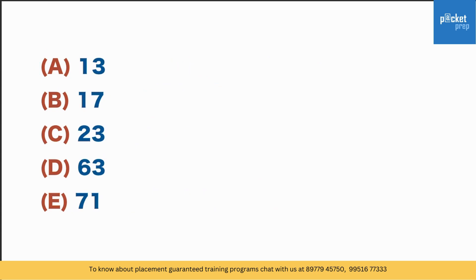Sometimes we see numbers. Observe these numbers — do you see anything odd? When you see numbers like 13 and 17, think of prime numbers. We have 23 as well, and even 71 is a prime number. But 63 is not prime because 7 × 9 = 63. Therefore 63 is the only number which is not prime, making it the odd one out.